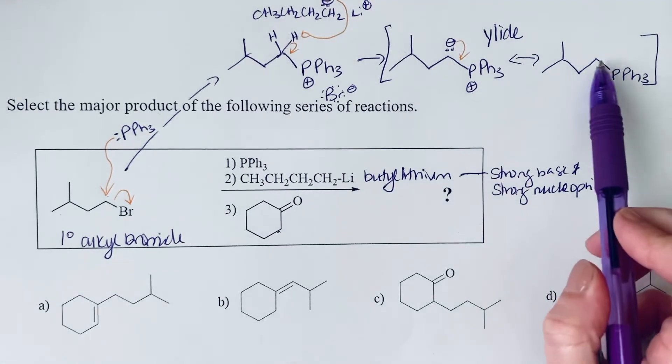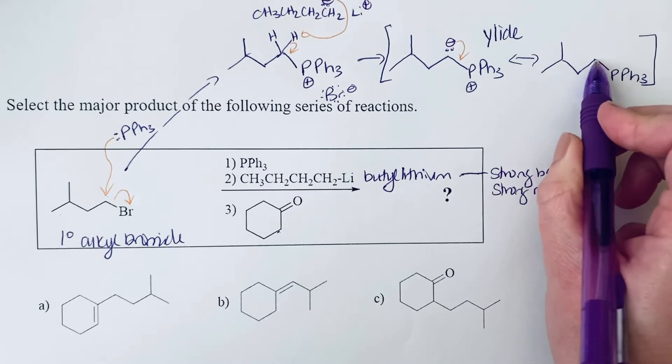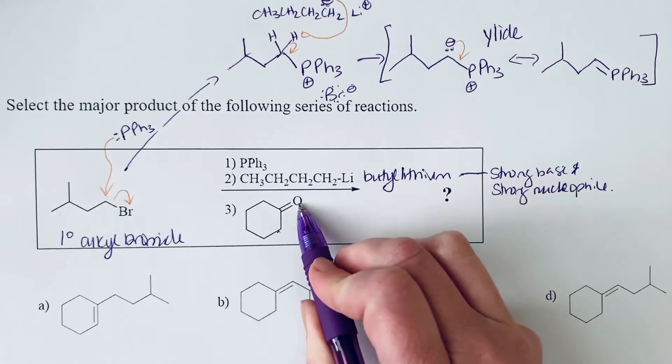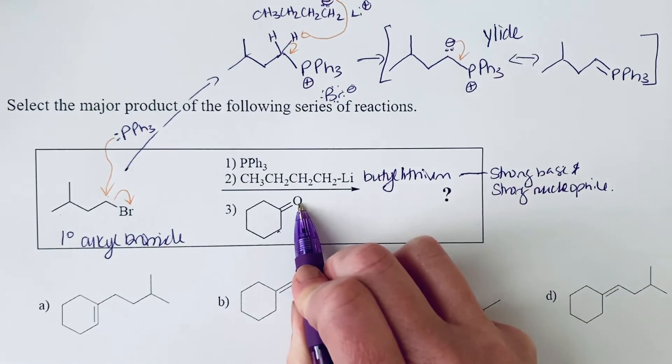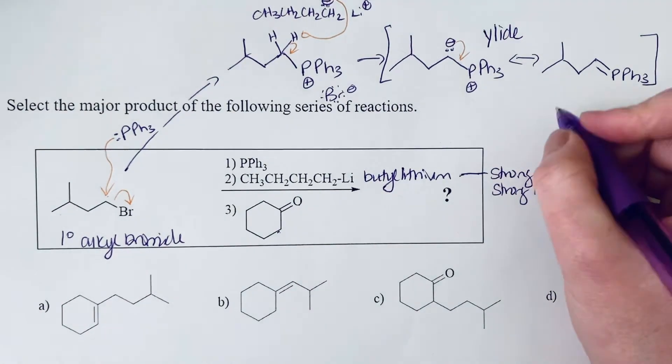If we want to draw the product, we can envision that this carbon is simply going to replace that oxygen exactly where it is as an alkene. We get really good control over our stereochemistry in this reaction.